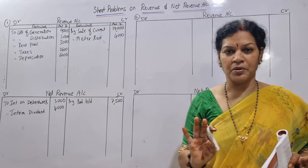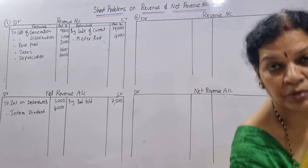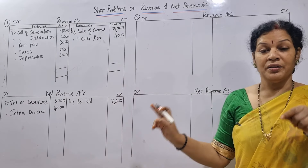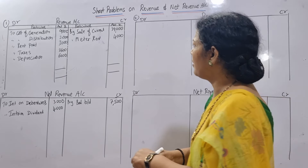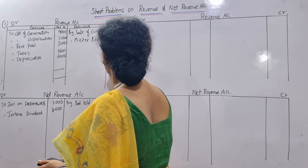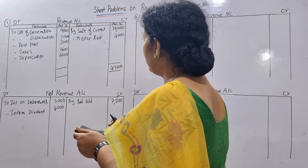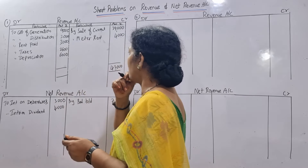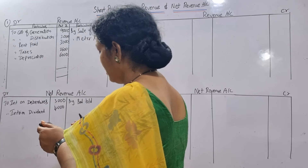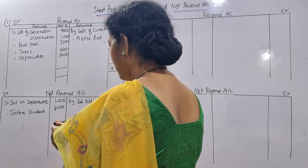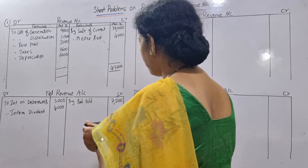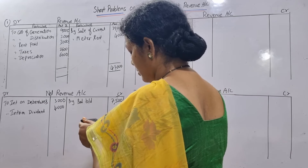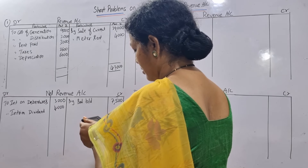Have we posted everything? Yes. So we simply have to close the account. For closing, revenue account first - we will get either a debit balance or credit balance, which will be transferred to the net revenue account. Credit side: 39,000 plus 4,000 equals 43,000. Minus expenses: 9,000 plus 2,000 plus 3,000 plus 2,600 plus 6,000 equals 22,600. So 43,000 minus 22,600 gives us 20,400.